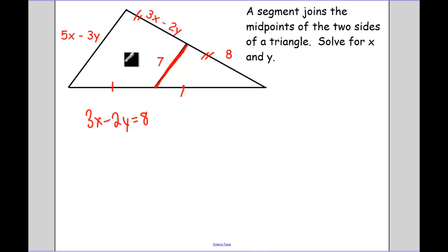Now at the same time, this 7 is half of 5X minus 3Y. Or thinking about it another way, 5X minus 3Y is equal to twice 7, which is 14.